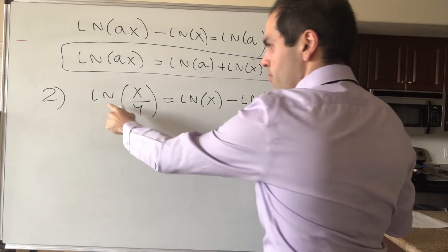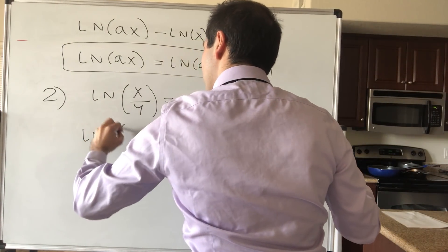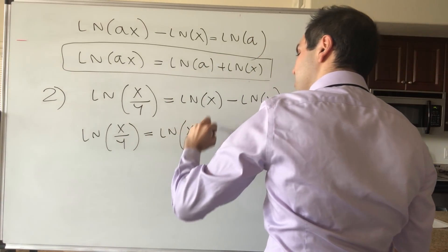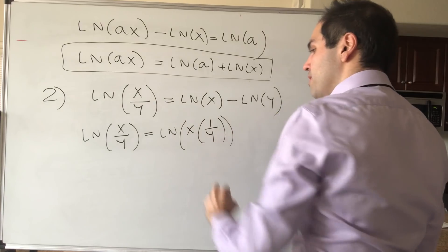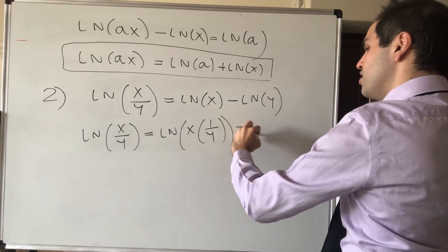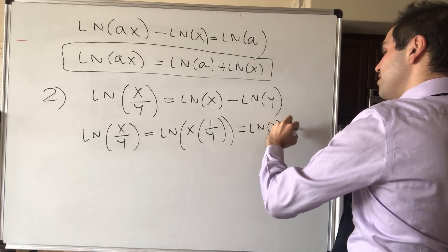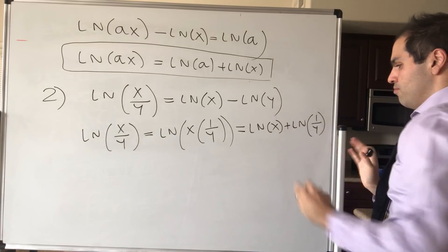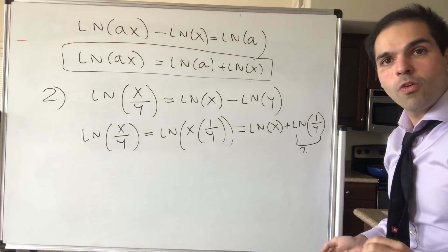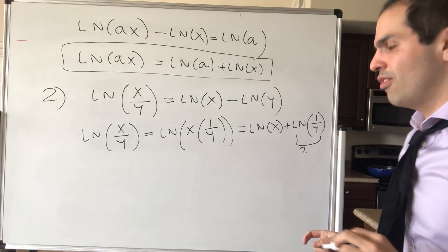So on the one hand, ln of x over y, that's ln of x times 1 over y. And by the multiplicative property, this is just ln of x plus ln of 1 over y. And so the question remains, what is ln of 1 over y? But notice the following trick.